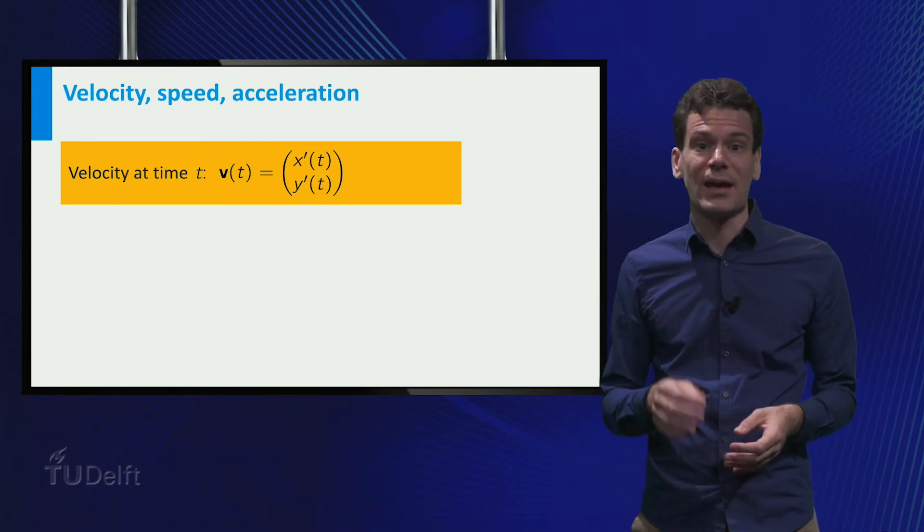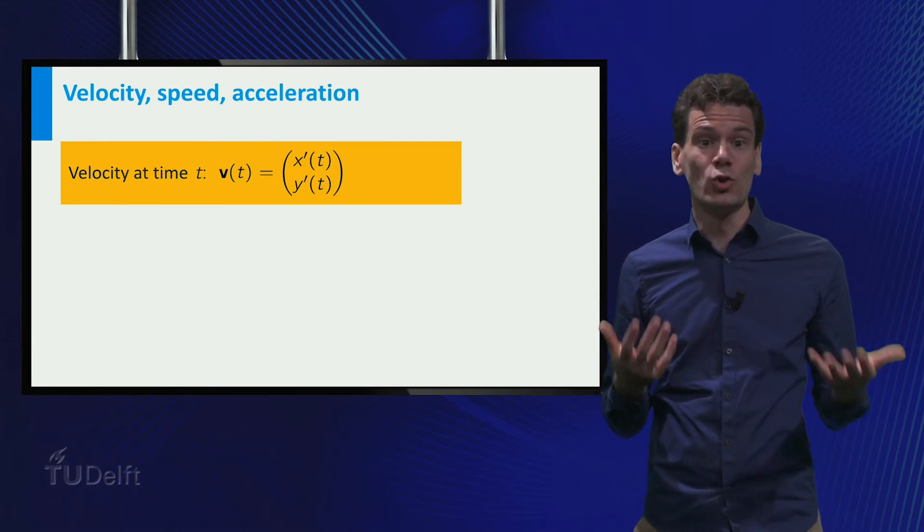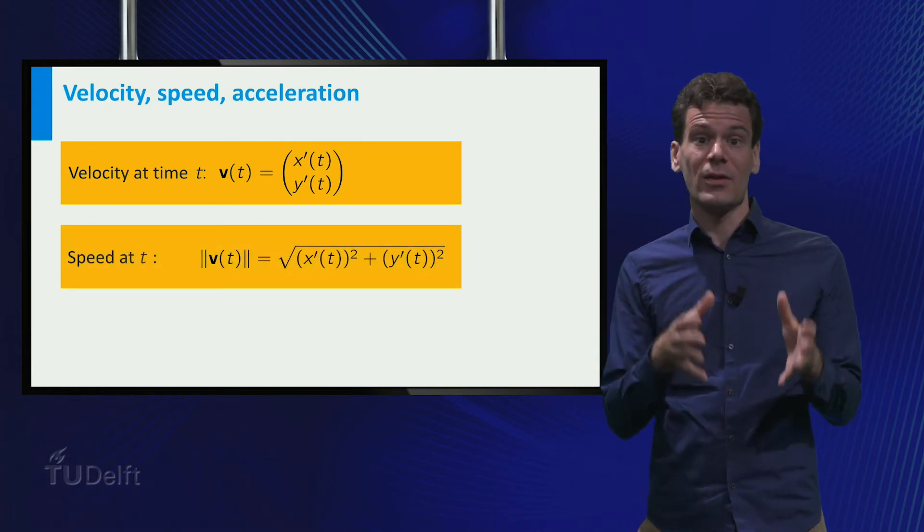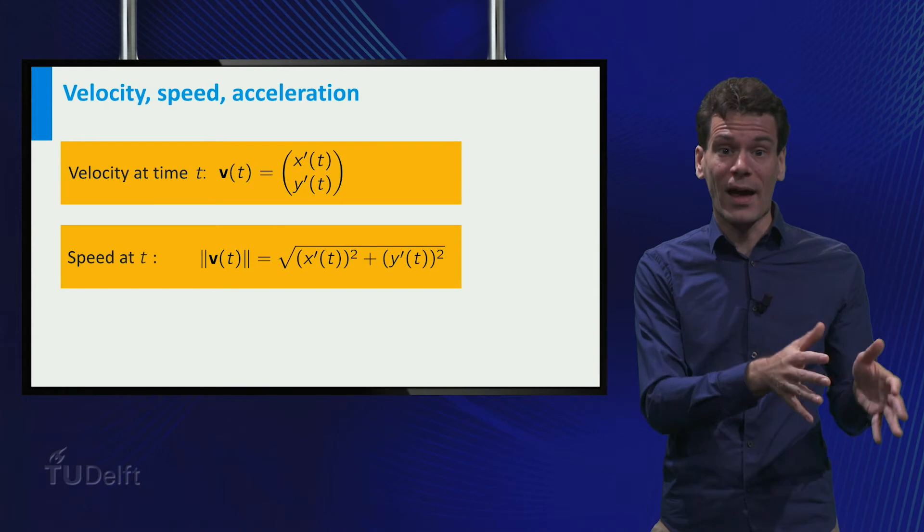As I mentioned before, the speed at time t can be found by taking the norm of this vector. It is equal to the square root of the derivative of x squared plus the derivative of y squared.